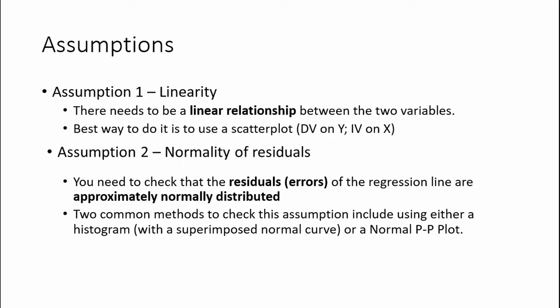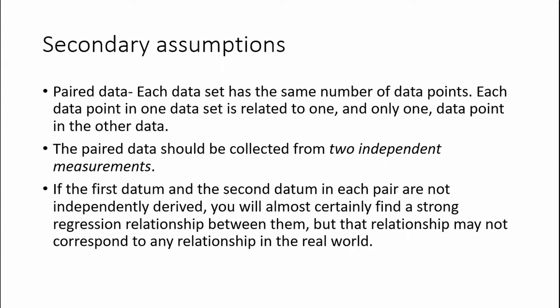When conducting any type of relationship testing such as correlations or regression, your data needs to be paired. This means each dataset has the same number of data points and each data point in one set is related to one and only one data point in the other. Additionally, for linear regression, the paired data should be collected from two independent measures — the second datum in each pair should not be created by mathematically manipulating the first, nor should there be two measures of the same thing. If they are not independently derived, you'll almost certainly find a strong relationship that may not correspond to any real-world relationship.